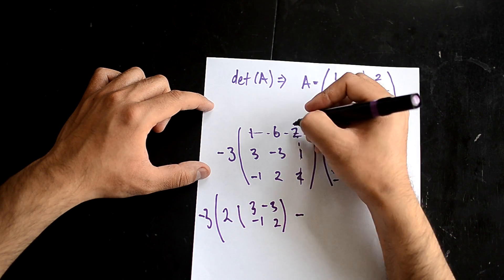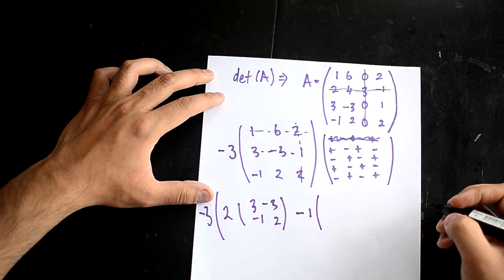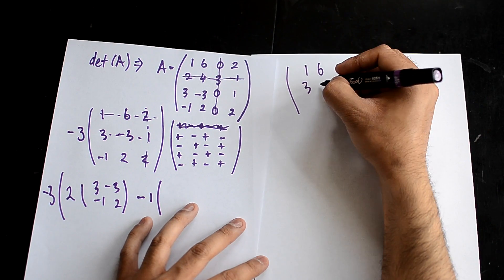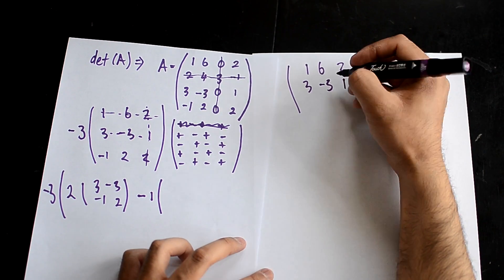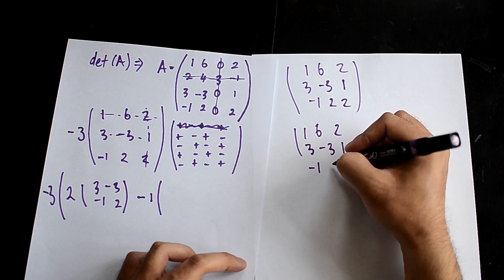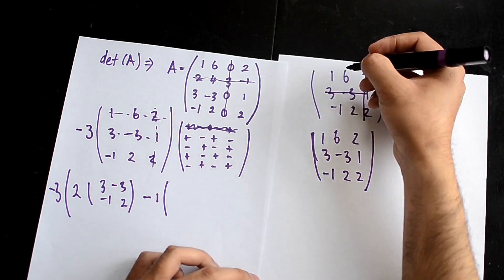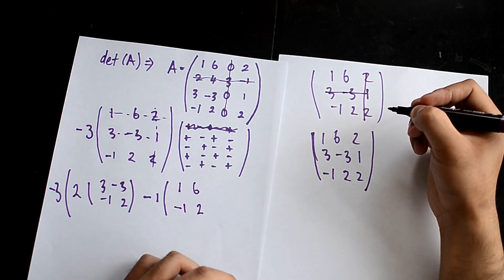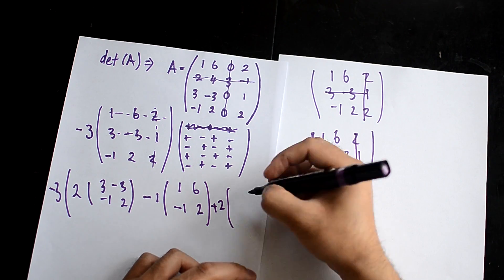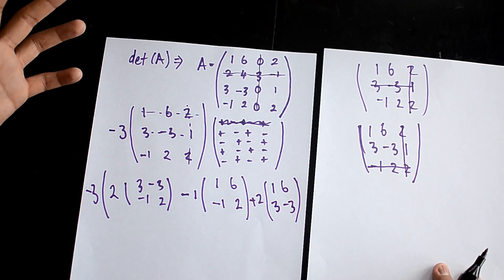Then I'm going to go to this one — remember it's negative, positive, negative, so this entry is negative 1. Drawing the line through gives me the matrix: 1, 6, -1, 2. And then picking this last number, this 2, the matrix is going to be 1, 6, 3, -3. So now I have all three 2 by 2 matrices.